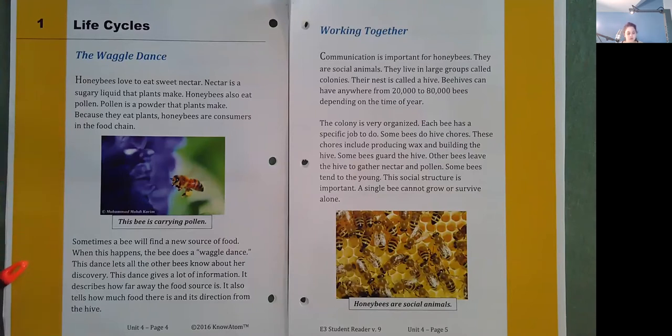Sometimes a bee will find a new source of food. When this happens, the bee does a waggle dance. This dance lets all the other bees know about her discovery. This dance gives a lot of information. It describes how far away the food source is, how much food there is, and its direction from the hive.